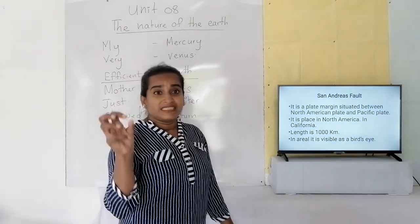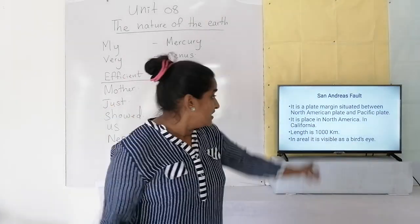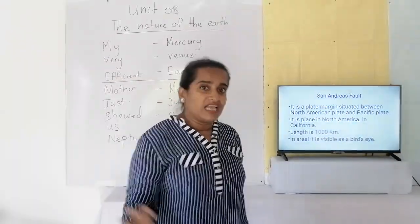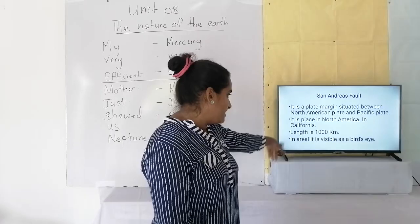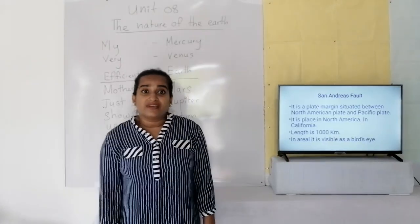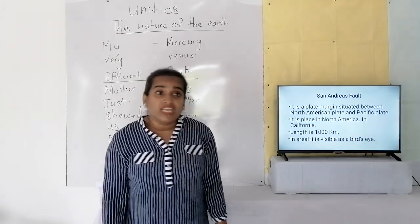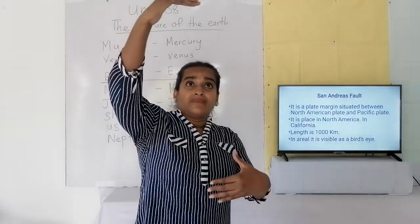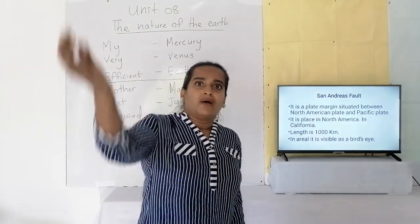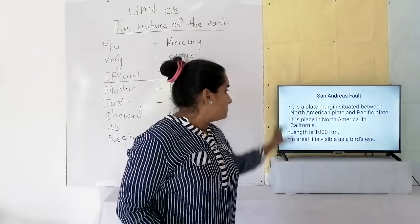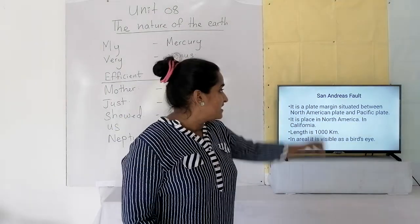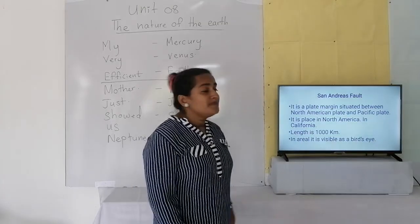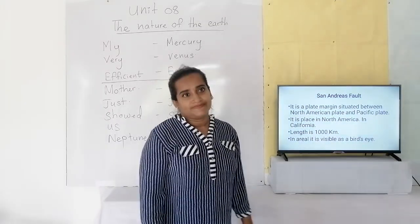The San Andreas Fault is situated in North America, in California, and its length is about 1,000 kilometers. If you observe it from the top, you can see its shape from a bird's eye view.